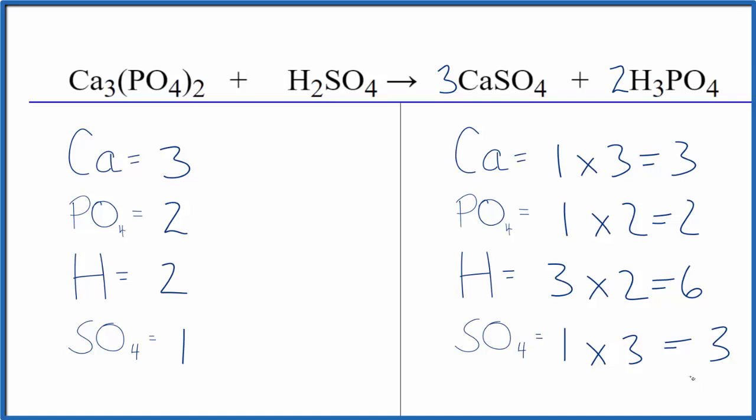Okay. Well, if we put a three in front of the sulfuric acid, the one sulfate times the three, those are balanced. And then two times three for the hydrogen is six, and we're done. This equation is balanced.